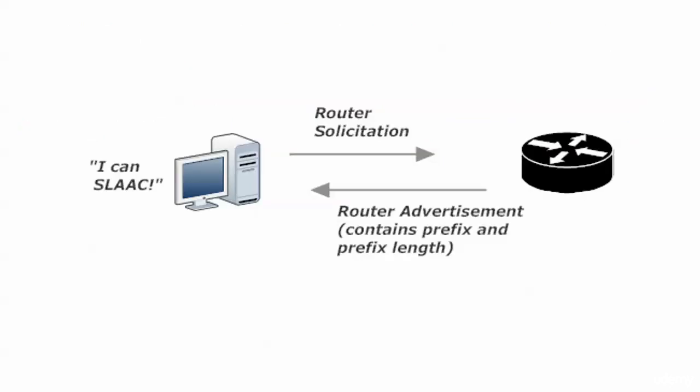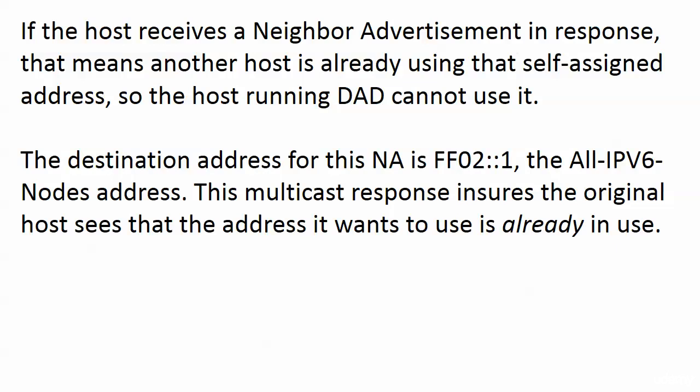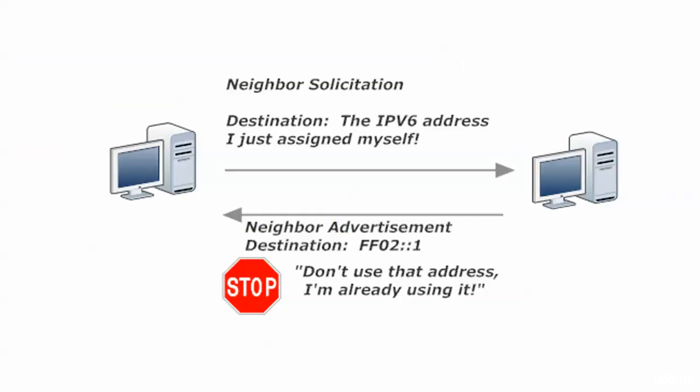The host sends out that NS, and if it gets a Neighbor Advertisement in response, that means another host is already using that self-assigned address, so the host running DAD cannot use it. The NS goes out with the IPv6 unspecified address as the source — all zeros, just a double colon — and the destination is the version 6 address. If the host hears back an NA, it says it can't use that address. The destination of that NA is the all IPv6 nodes address, ff02::1.